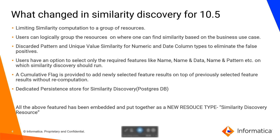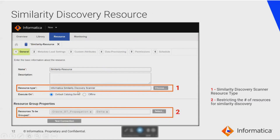All the above features have been embedded and put together as a new resource type: the similarity discovery resource. This new resource type has been added to EDC 10.5 from the scanner configuration in the catalog administrator, where you configure a new resource. By selecting the resource type, you can choose Informatica similarity discovery scanner — similar to how you would select a resource like Oracle or SQL Server — and group the resources on which you want to run the similarity scan. The number of resources you can group together at once is 4, and with the custom option enabled you can do more than 4.